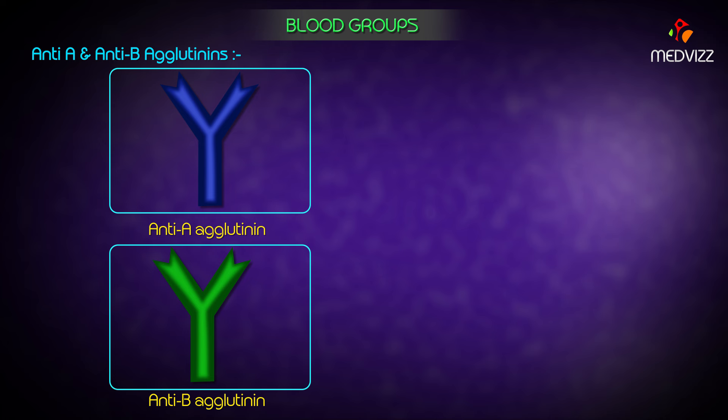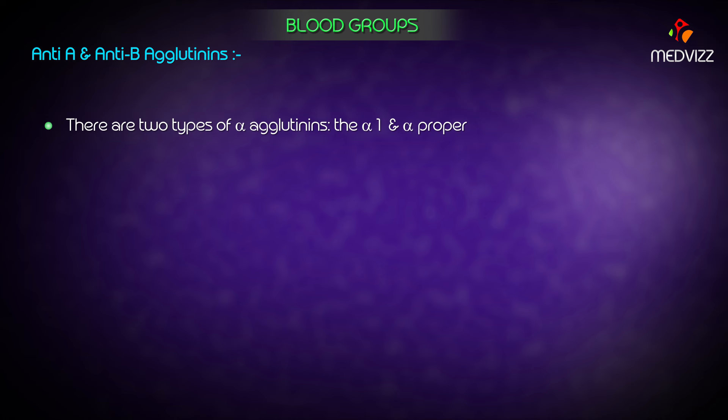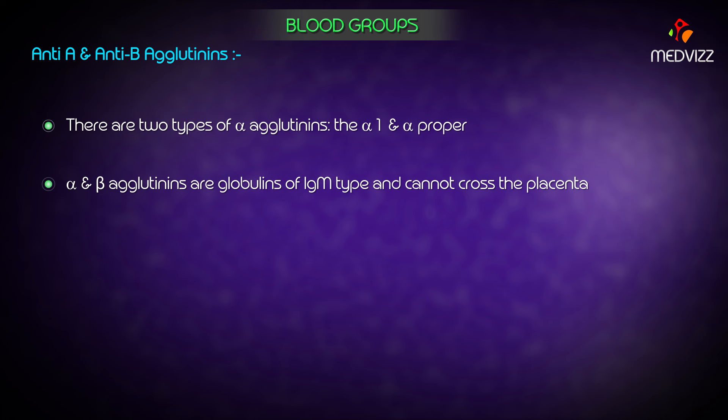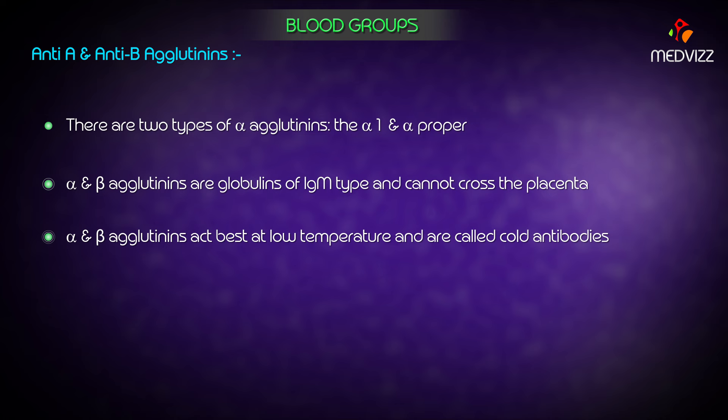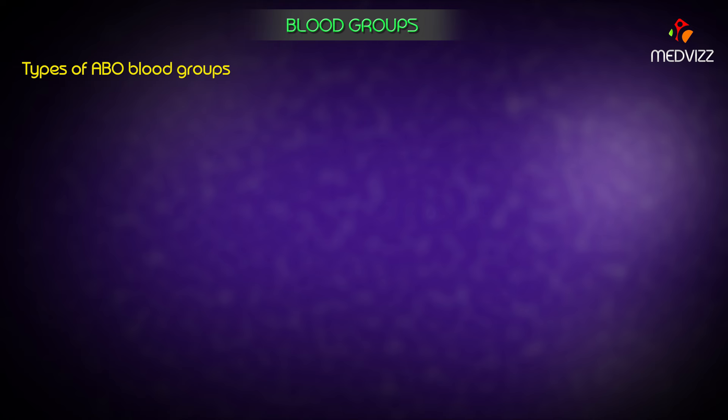Anti-A agglutinin and anti-B agglutinin are the antibodies that react with antigen A and antigen B respectively. There are two types of alpha agglutinins: alpha-1 and alpha proper. The alpha and beta agglutinins are globulins of IgM type and cannot cross the placenta. They act best at low temperature and are therefore also called cold antibodies.